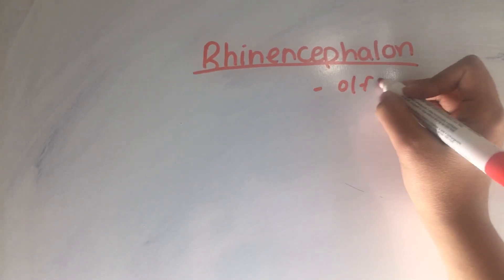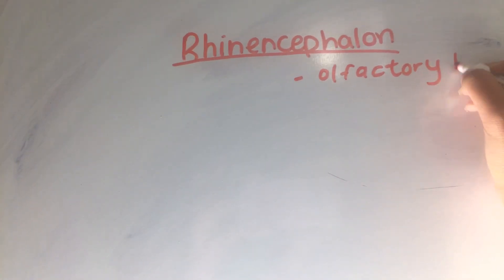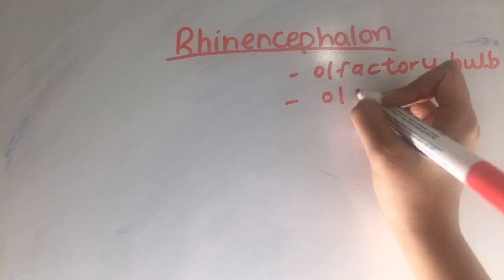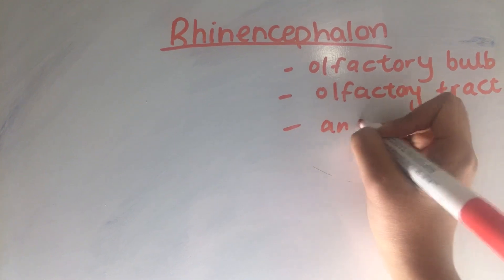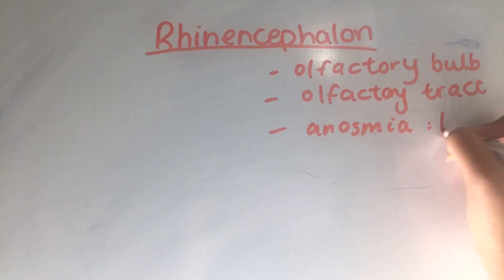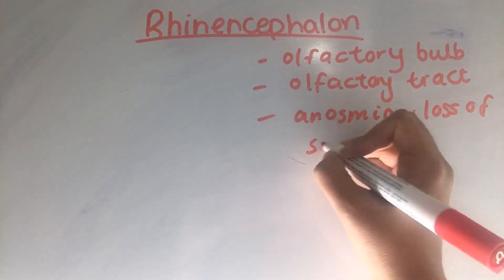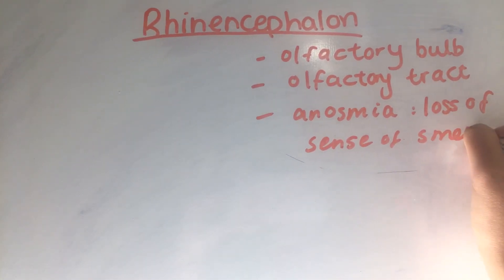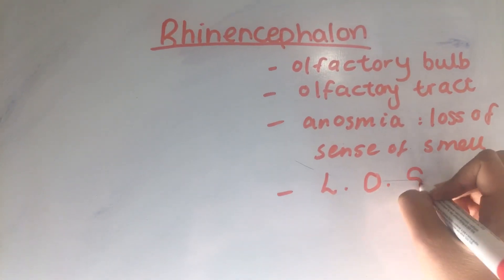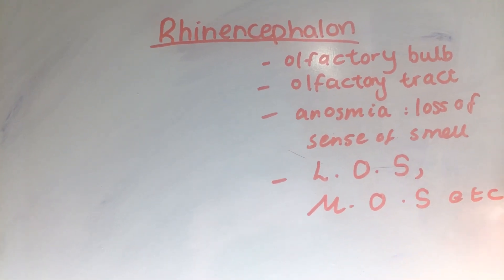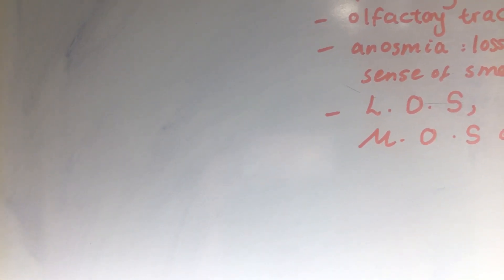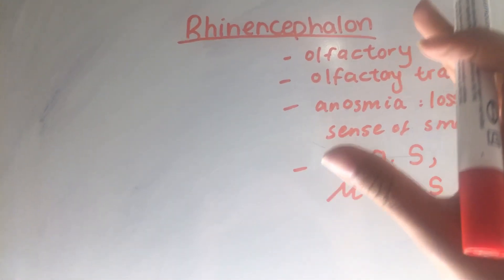Let's talk about the rhinencephalon — what its components are, and what terms like the olfactory bulb, olfactory tract, anosmia (which is loss of the sense of smell), the lateral olfactory stria, and the medial olfactory stria are. We'll look at what the rhinencephalon is composed of and what its structures are.